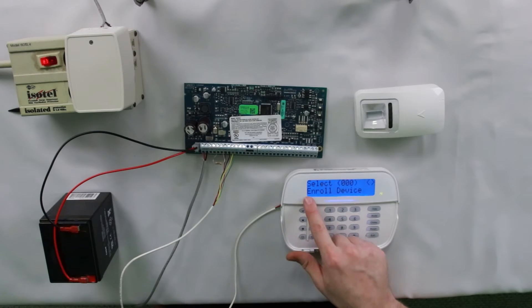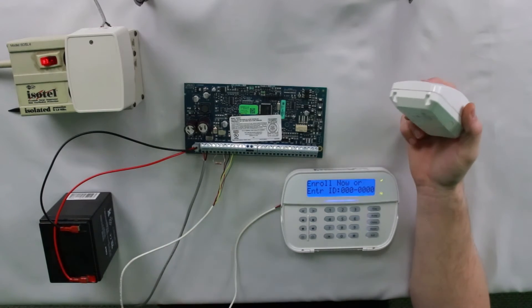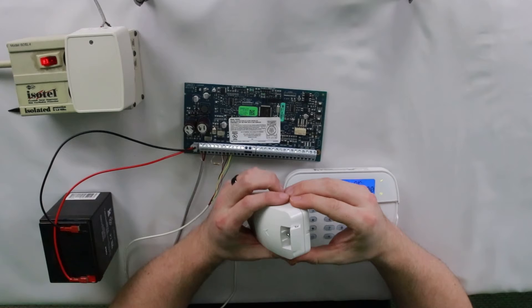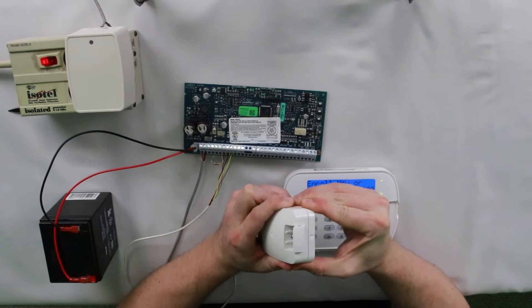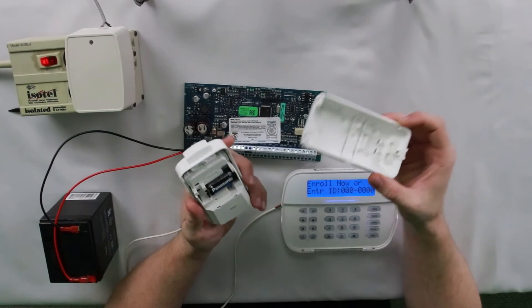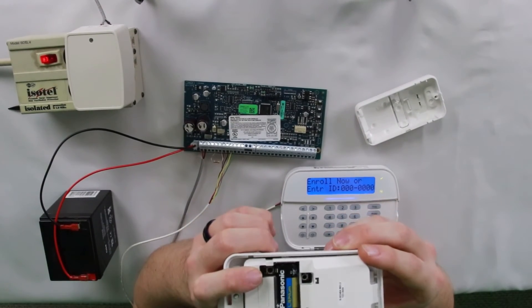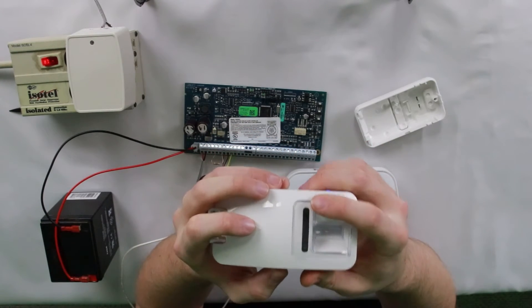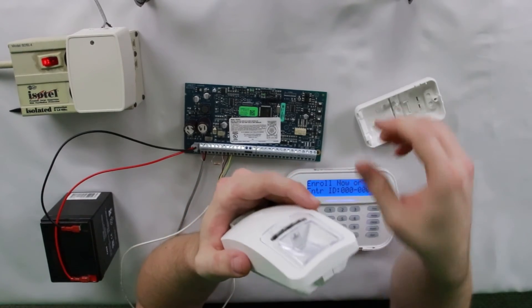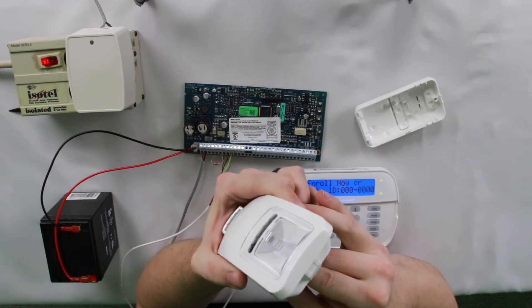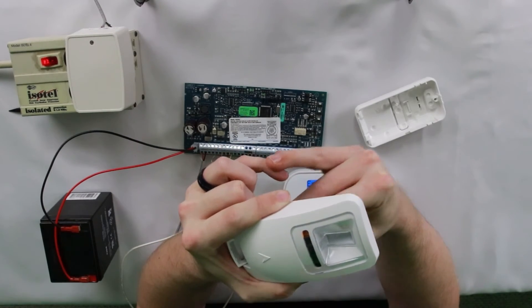Hit star one time. It should say select 00 enroll device. Hit star again. At this point, it will say enroll now or enter ID. And this is where you can actually enroll the sensor. For all Power-G or wireless devices, there are different ways to trigger the enrollment. With this one, what you have to do, because it's a motion, there's a little prong inside here next to the battery. You have to hold that down until you see the yellow LED on the front of the sensor light up, and then you let go of the button.